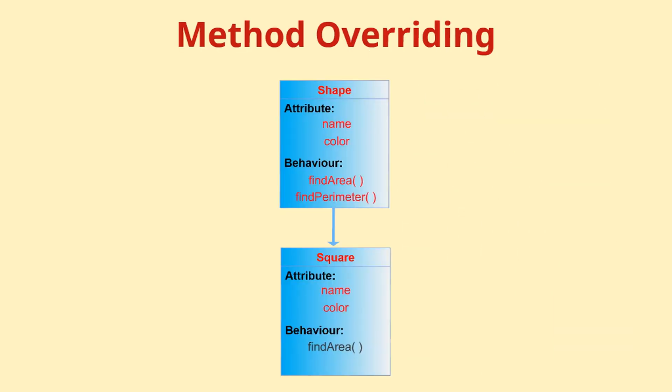In case of inheritance, the derived class can either use the find area method of the base class or it can have its own implementation of find area method, which will then override the base class function. This is called method overriding.